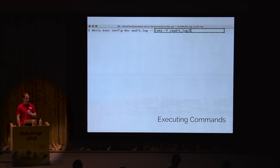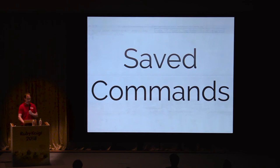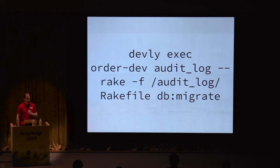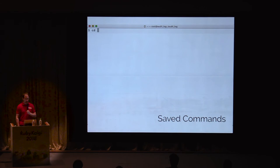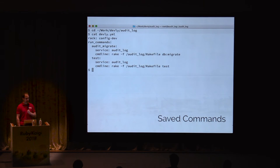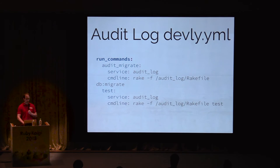When we share our work, how will other teams remember how to run our migrations? What we've done is not very usable, and it would be nicer if migrations were easier for everyone to run. To make running migrations easier, we can save the long devly exec migration command as an easy-to-remember command. We don't want to remember or look up or type this long command to run migrations, so let's give it a friendly name. The saved commands live in the Devly YAML file for the repository we are working from. Each repository can have its own Devly YAML with its own custom commands.